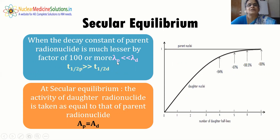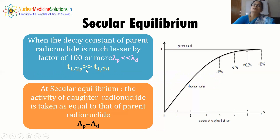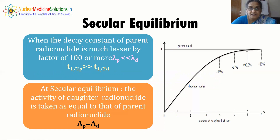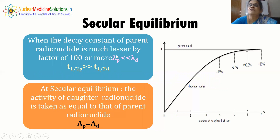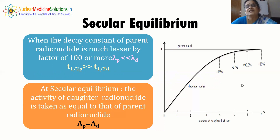For secular equilibrium, the decay constant of the parent is much less than the daughter's — by a factor of more than 100 (λ_P << λ_D) — meaning t_{1/2,P} is much greater than t_{1/2,D}. At secular equilibrium, the activity of the daughter equals that of the parent, and the daughter appears to decay at the rate of the parent. Even after elution, the curves re-merge and the daughter re-establishes activity equal to the parent.